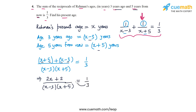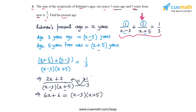Now let's cross multiply. 3 multiplied by 2x + 2 gives us 6x + 6 on the left side. On the right side we get (x - 3)(x + 5). Expanding the right side: x times x is x², 5x minus 3x is 2x, and minus 3 times 5 is minus 15. So the right side is x² + 2x - 15, equal to 6x + 6.